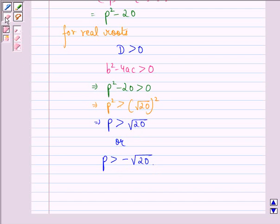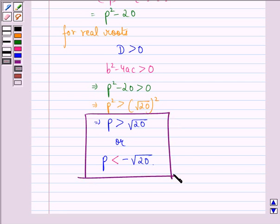Now here we see that we have p < -√20. So this is our answer to this question. I hope that you understood the solution and enjoyed the session. Have a good day.